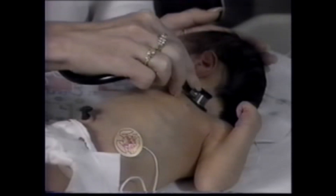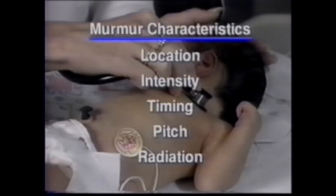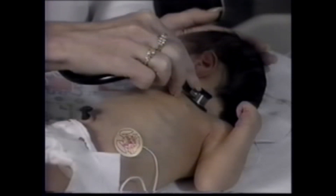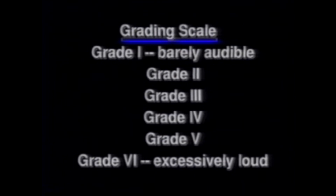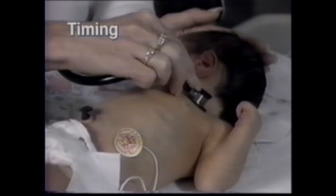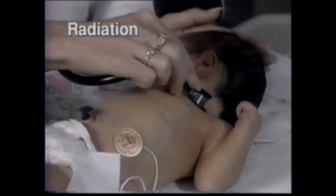Cardiac murmurs are abnormal sounds created by turbulent blood flow. When evaluating a murmur, it is important to determine five characteristics: location, intensity, timing, pitch, and radiation. Most murmurs are usually located below where they are best heard; therefore, a murmur from a ventricular septal defect would best be heard at the lower left sternal border. The intensity of a murmur is graded on a scale of one to six, with grade one being barely audible and grade six heard with the stethoscope just off the chest. The timing refers to where in relation to S1 and S2 the murmur occurs. The pitch refers to the tone of the murmur, and radiation identifies all locations where the murmur can be heard. A murmur from a patent ductus arteriosus will radiate from the upper left sternal border to the back of the baby following the branching of the pulmonary vessels.